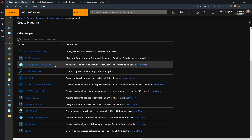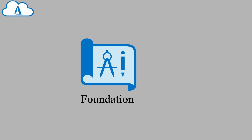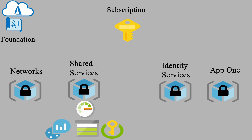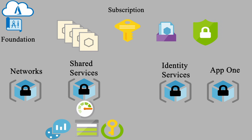The first question is: what exactly is in each of these blueprints? Our Foundation blueprint will be deployed at the Azure subscription level and in there we'll be deploying four resource groups. Three of these are placeholders, and the shared services resource group will have resources deployed in it setting up monitoring — including a Log Analytics workspace, an Azure Storage account, and a Key Vault. All of these resource groups will be locked.